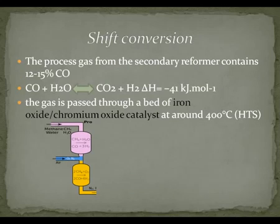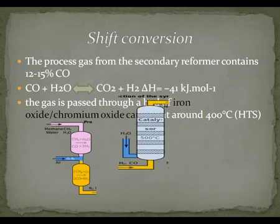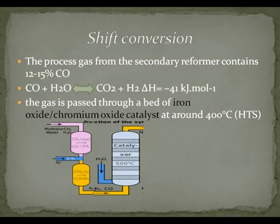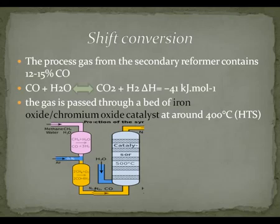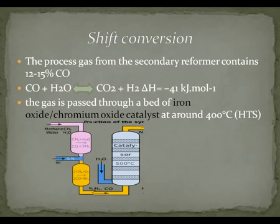Moving on to shift conversion: in the shift conversion process, the reforming process will produce undesired carbon monoxide, which needs to be removed. The gas is passed through a bed of iron oxide and chromium oxide catalysts at around 400 degrees Celsius, which is called the high-temperature shift conversion, or HTS.